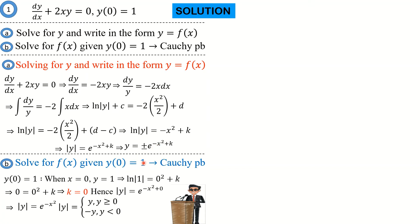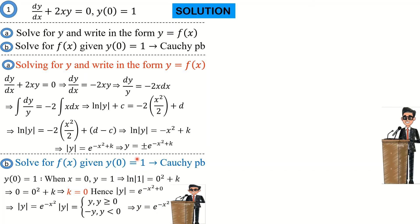Substituting x equals 0, we get plus or minus e raised to the power 0, which gives plus or minus 1 on the right-hand side, but the left-hand side gives 1. For this equation to hold, we must take the positive sign. Therefore y equals positive e raised to the power negative x squared, and that is the particular solution to the problem.